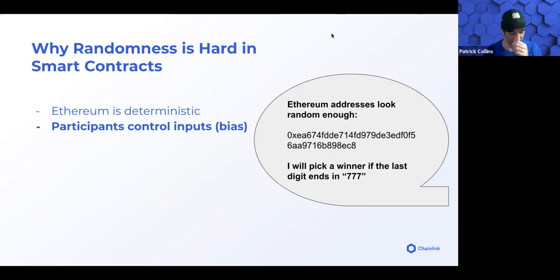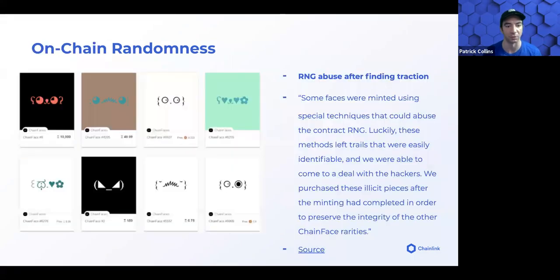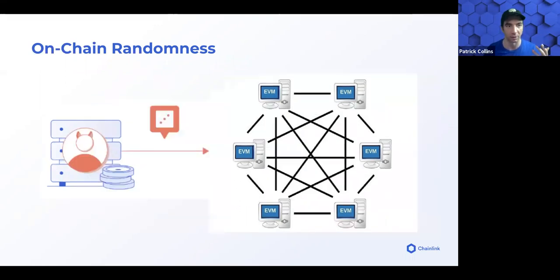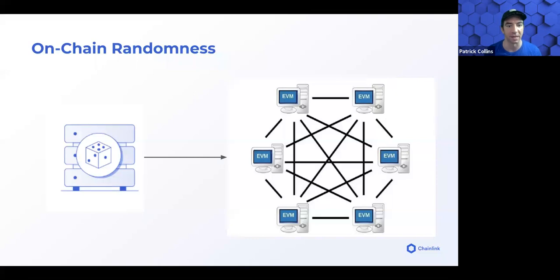With the evolution of how random numbers were generated, the next iteration was to base the random number off of the block hash or the timestamp of the block at the moment. Since Ethereum is deterministic, developers can't come up with a truly random number — only a pseudo-random number. The thought is the block hash is probably complicated enough that somebody can't actually hack it. But something you have to keep in mind is that any decision a user makes which affects the outcome can give the user an unfair advantage. In the case of the block hash or timestamp, the miner has a choice of whether or not to publish a block.